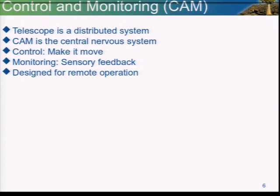Charles and I and our controller monitoring team colleagues deal with a telescope which is essentially made up of a large number of distributed and fairly independent devices. CAM is the nervous system that pulls it all together. The control bit is getting them all to work together to do what we want them to do, and the monitoring bit is receiving sensory feedback. From that we can identify unsafe or damaging situations and take action — like shutting down stuff that's overheating, or if the wind is blowing too strongly, putting the antennas in a safe position.